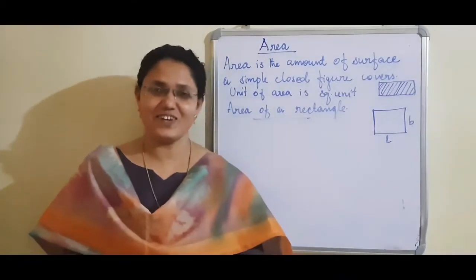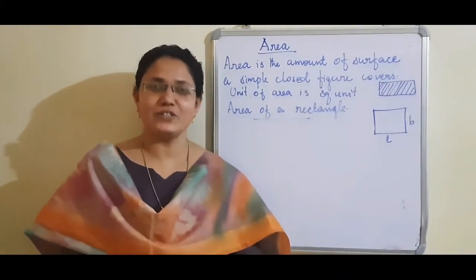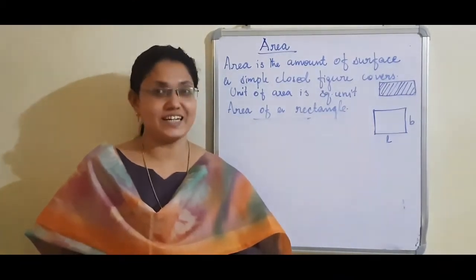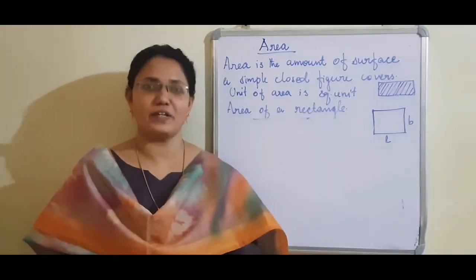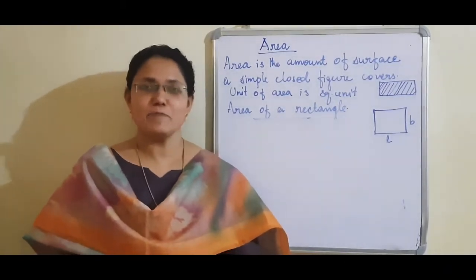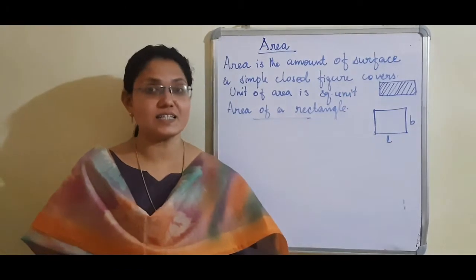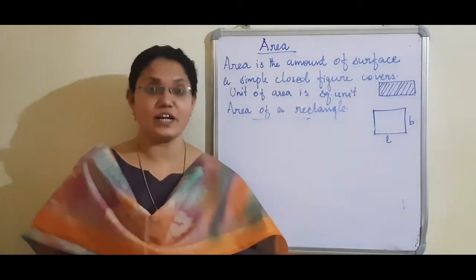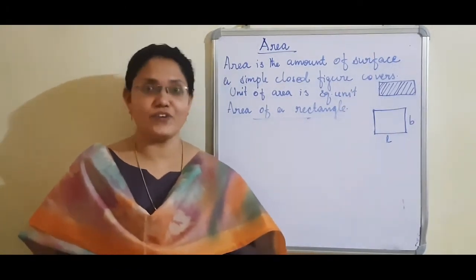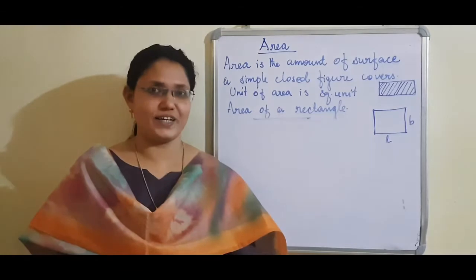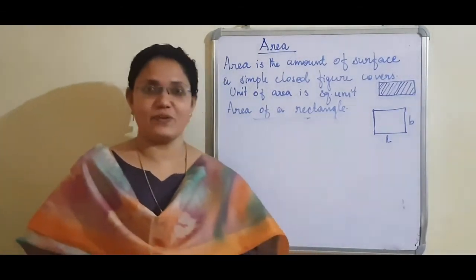Hi children, welcome back to your mathematics class. Today we are studying about area. Already you have learnt about perimeter. Perimeter is the total distance around a closed figure or the boundary of a closed figure. Today we are studying about area.